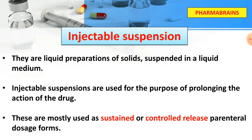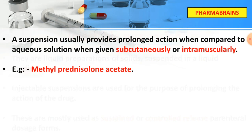Injectable suspensions are mostly used as sustained or controlled release parenteral dosage forms. They provide prolonged action when compared to solutions. When we use this injection, we administer it subcutaneously or intramuscularly. An example is Methylprednisolone Acetate.